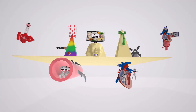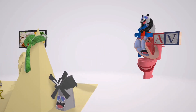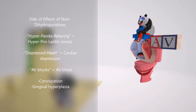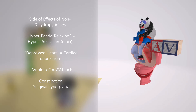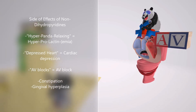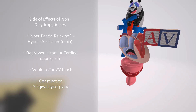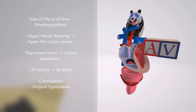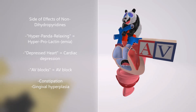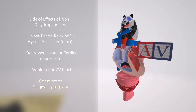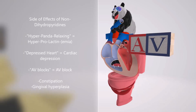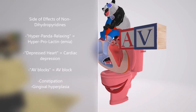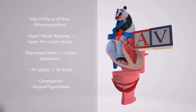Now let's talk about the side effects of the non-dihydropyridines. We have a panda that was super excited about the Jews' escape from Egypt — a hyper panda who's relaxing — 'hyper panda relaxing' for hyperprolactinemia, especially in the case of verapamil. The panda is sitting on a heart that is depressed — a very sad and depressed heart — for cardiac depression. Non-dihydropyridines may lead to cardiac depression. The panda also brings his AV blocks, to help us remember AV block as another adverse effect. And the heart is constipated — it's been on the toilet for a long time — as constipation is another side effect. And again we see a mouth with excessive gums to remind us of gingival hyperplasia, also an adverse effect of the non-dihydropyridines.